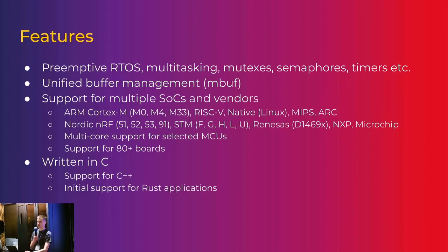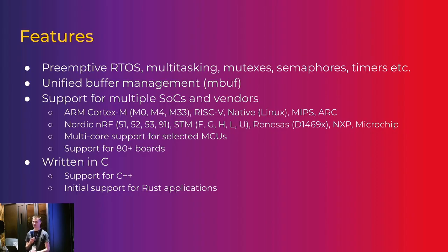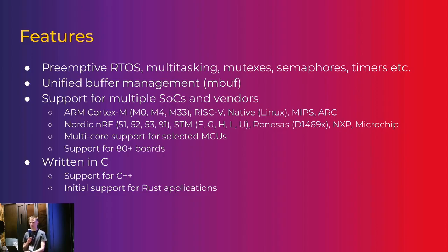We also support multiple families from STM and also Renesas, which is the former Dialog DA1469x family. There is support for multi-core, although it's not symmetric multi-processing yet — but you can get a sort of IPC between cores if needed. There are more than 80 boards supported out of the box, and it's quite straightforward to add support for a new BSP if needed. The OS itself is written in C, but you can also use C++ in libraries or in the application, and there's also some initial Rust support for applications.